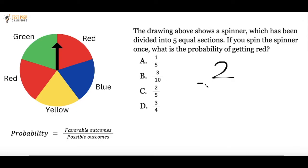And what's the total number of possible outcomes? Well, it's one, two, three, four, five. There are five possible outcomes.